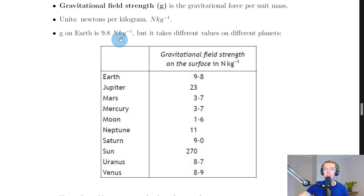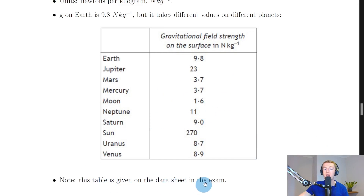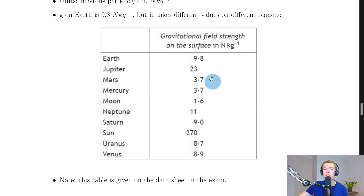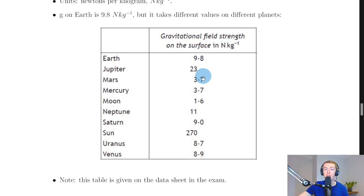g on Earth is 9.8 N/kg, but it takes different values on different planets. From the data sheet table: the Sun has the largest gravitational field strength at 270 N/kg, Jupiter is next at 23 N/kg, Mars and Mercury both have 3.7 N/kg, and the Moon has 1.6 N/kg. Key values to remember: 9.8 for Earth, 3.7 for Mars and Mercury, and 1.6 for the Moon.